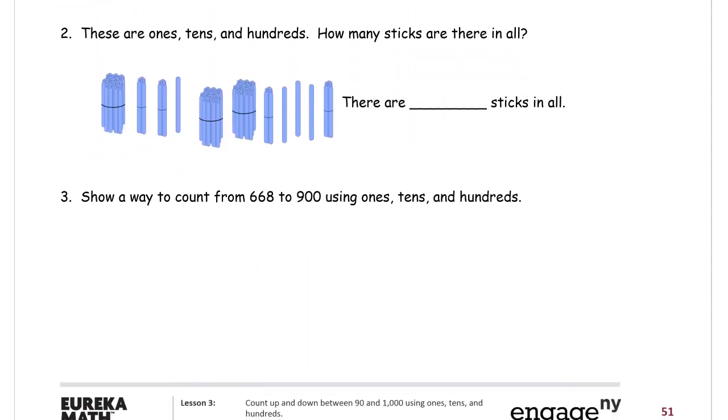Number two. These are ones, tens, and hundreds. How many sticks are there in all? So these are hundreds, and you see we have three hundreds. Plus what do we have in tens? One, ten, twenty, thirty, forty. In tens. And then ones we have one, two, three, four. Three hundred forty-four sticks.